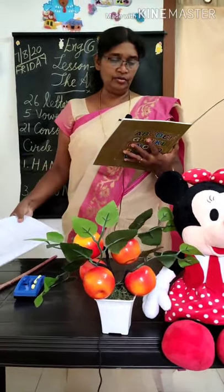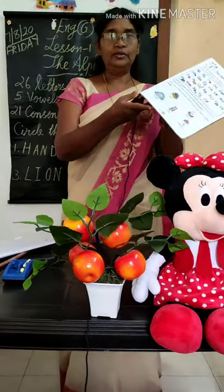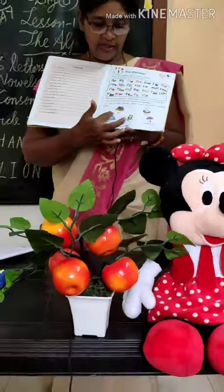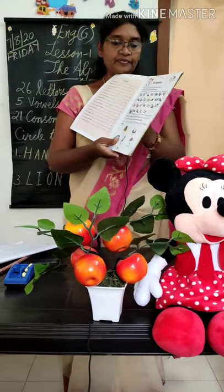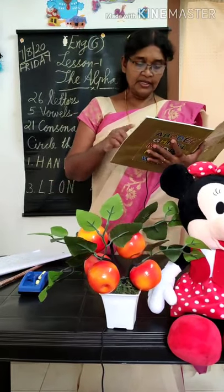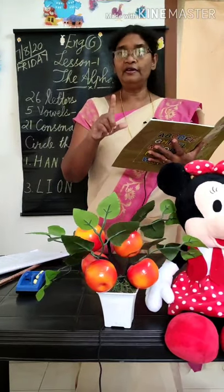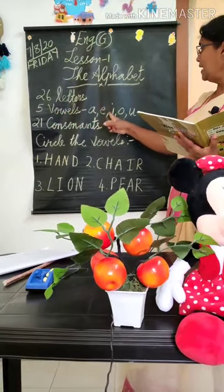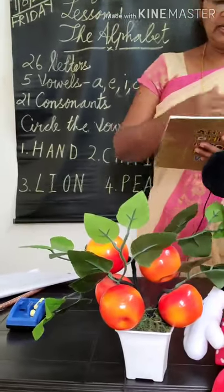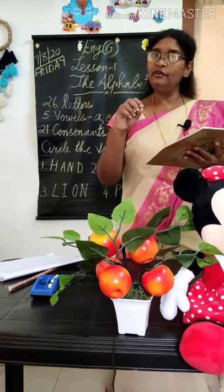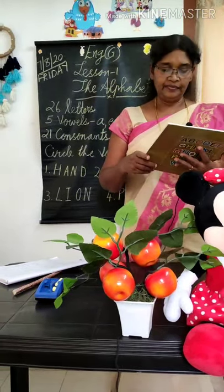Now we are going to learn this one. All of you look here and look at these pictures. These words begin with a vowel sound. Vowel sound means — how many vowels are there? 5 vowels: A, E, I, O, U. These words begin with a vowel sound. What is a vowel sound? Let's see.